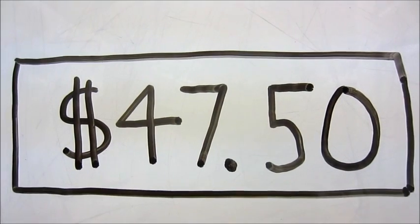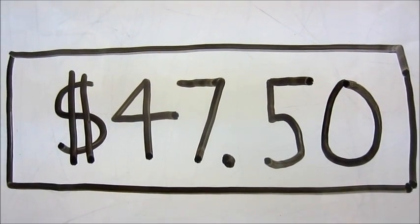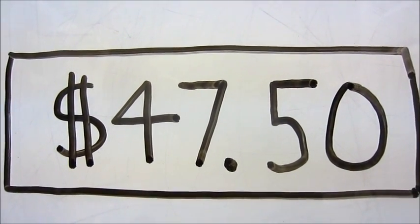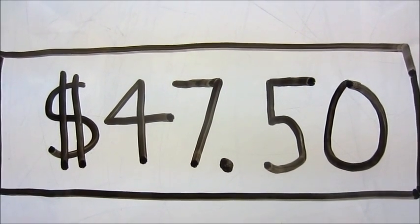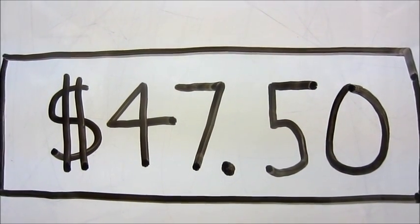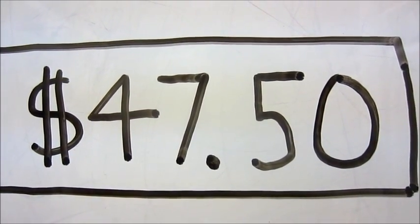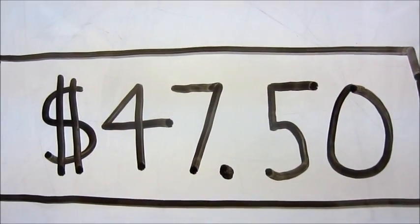we know that the decimal tells us there are more digits to the right of the 7. So the 5 and the 0, or the 50, represents $0.50, which is part of the $47.